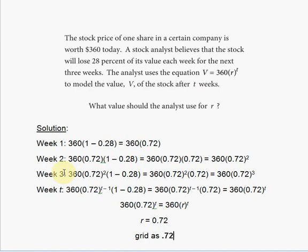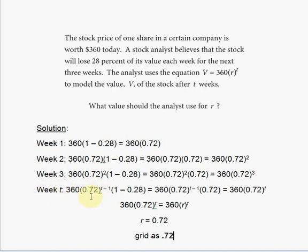For this reason, we use week t. We know the week number and the current value power are linked — the power is exactly one integer less than the week number. Using the same logic for week t, we want to find the value the analyst used for r. We develop the formula for week t to identify r. For week t, the current value power will be t minus one, so 0.72 is raised to the t minus one power. By the end of week t, 28% is again lost from the week t minus one value.